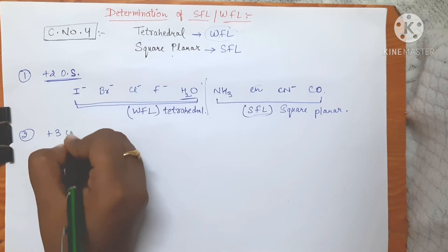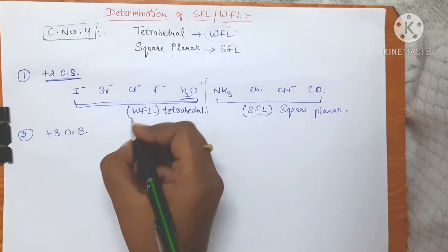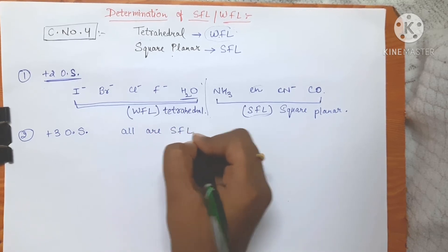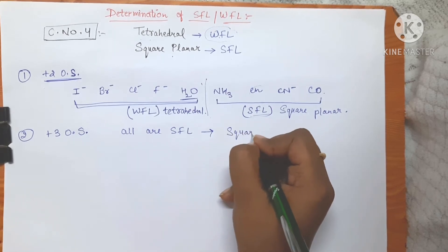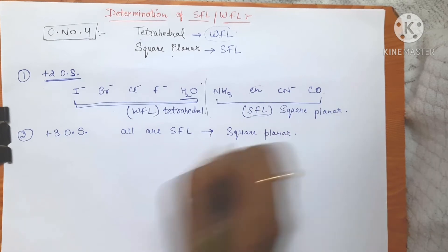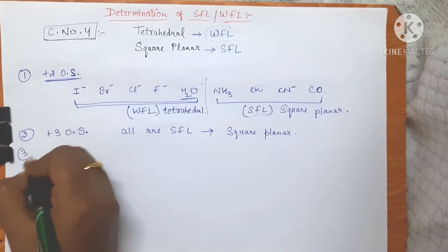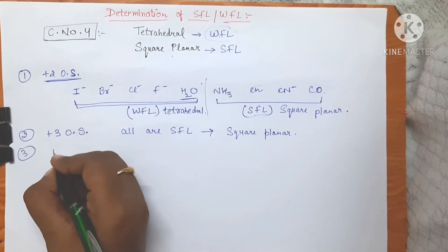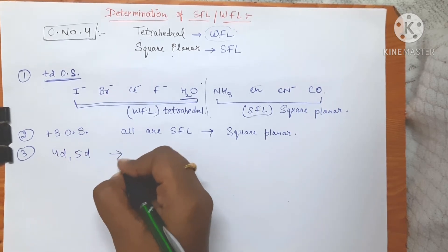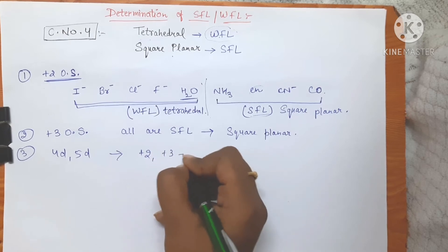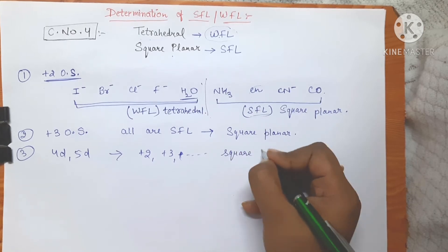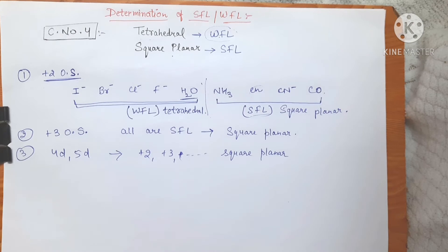In case of plus three oxidation state, all the ligands are going to behave as strong field ligands — meaning all complexes are going to have square planar geometry. And for the remaining oxidation states, for 4d and 5d series, all oxidation states like plus two, plus three, and so on are going to have square planar geometry, meaning all ligands behave as strong field ligands.